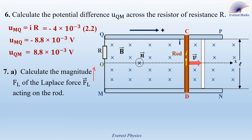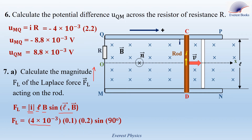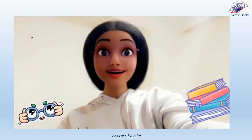Part 7A: calculate the magnitude F_L of the Laplace force acting on the rod. The formula is F_L = |I|·L·B·sin(θ), where θ is the angle between the current direction vector L and B. With |I| = 4×10⁻³ A, L = 0.1 m, B = 0.2 T, and θ = 90°, we get F_L = 8×10⁻⁵ newtons. Pay close attention — this result is important.